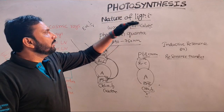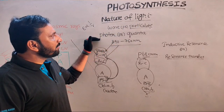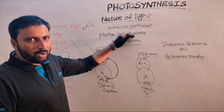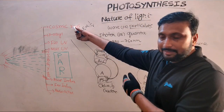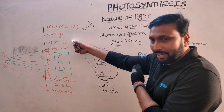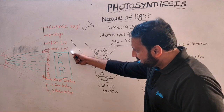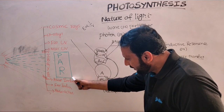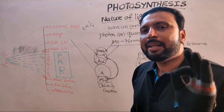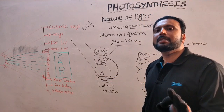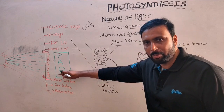The next topic is the nature of light. Light can have wave or particulate nature. The particulate nature of light is called a photon or quanta. Observing the spectrum: cosmic rays, X-rays, far UV rays, ultraviolet rays, near UV rays, and then 390 to 760 nanometers — this is the visible light range, called PAR: Photosynthetically Active Radiation.